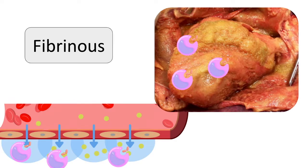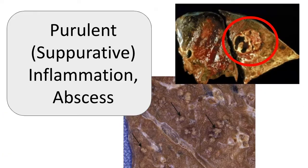These exudates may be dissolved by fibrinolysis and cleared by macrophages, but if the fibrin is not removed, over time it can stimulate the ingrowth of fibroblasts and blood vessels, which can lead to scarring. Because of the tendency of this type of exudate to occur in the linings of body cavities like the pericardium and pleura, if these areas develop scars, this can impact the mobility of the underlying tissue and its function.